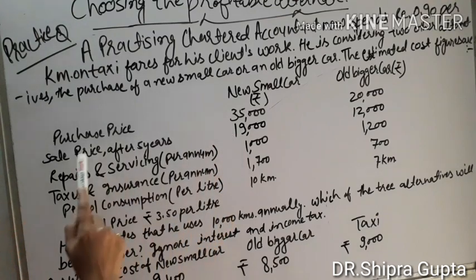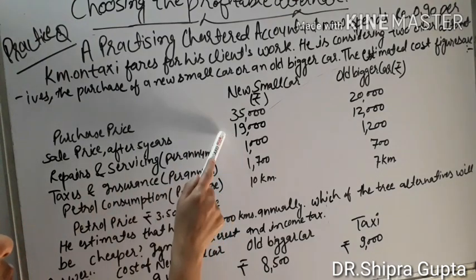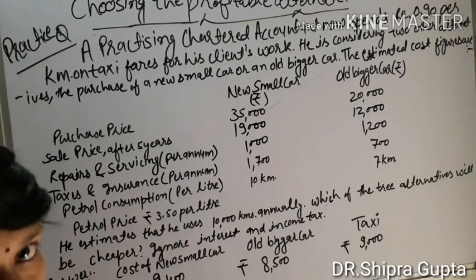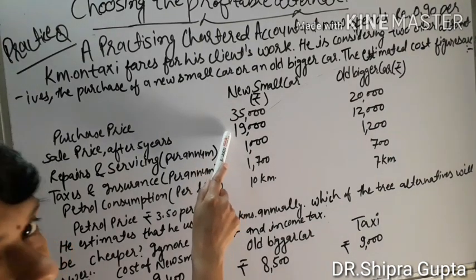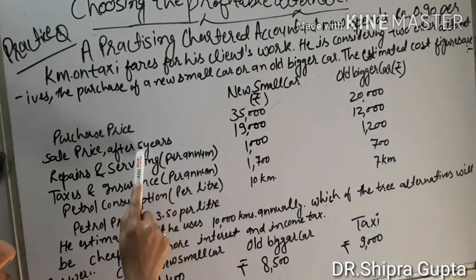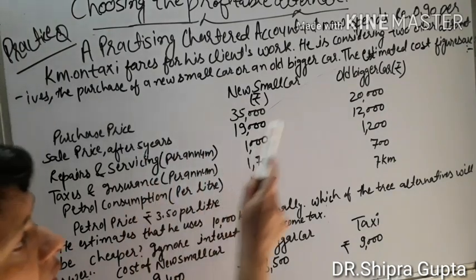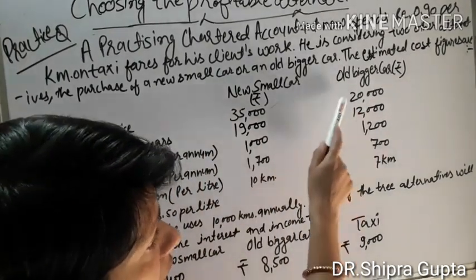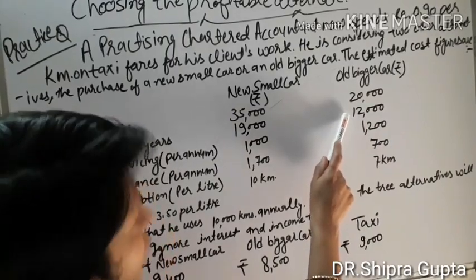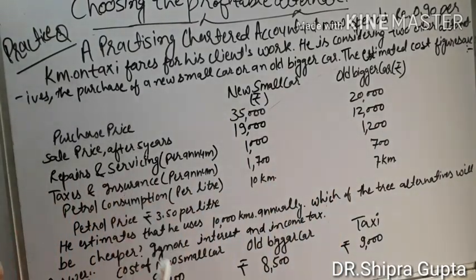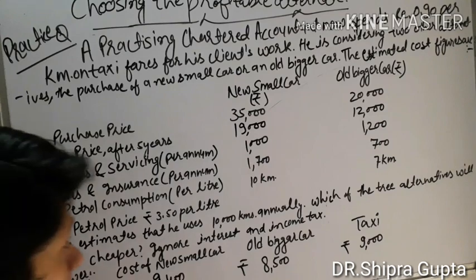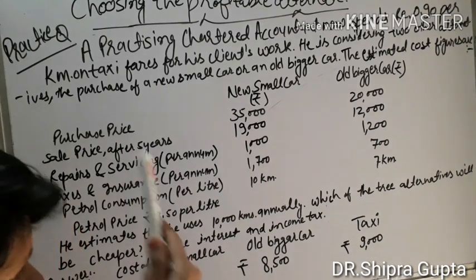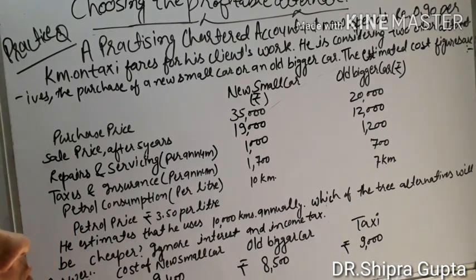For the new small car: cost ₹35,000 minus scrap value ₹19,000 (the sale price after five years), divided by working life of five years. For the old bigger car: ₹20,000 minus ₹12,000, divided by five. Then you calculate the annual depreciation for both alternatives.